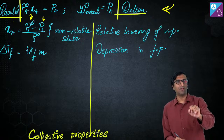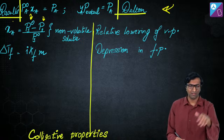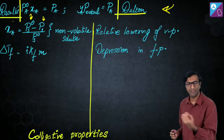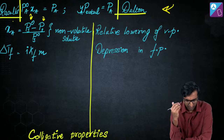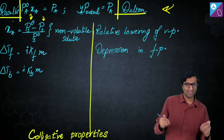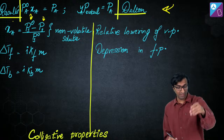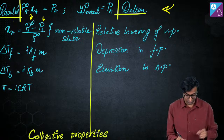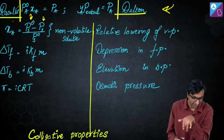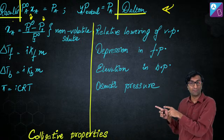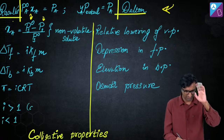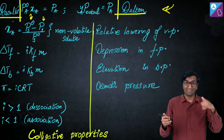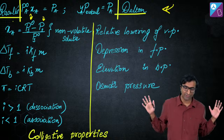I'm writing all formulas with i from the start. I know you were taught without i first, but you're past that stage. ΔTb = i·Kb·m for boiling point elevation. Osmotic pressure π = i·CRT. If i > 1, dissociation is happening — more particles present than before. If i < 1, association is occurring. This is the crux of all colligative property theory.